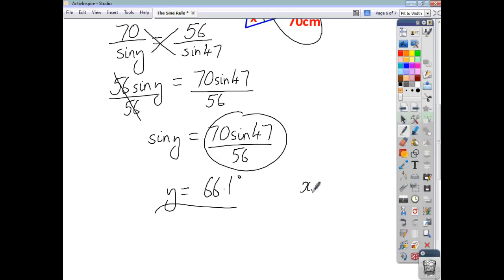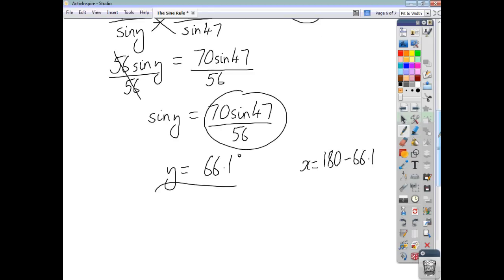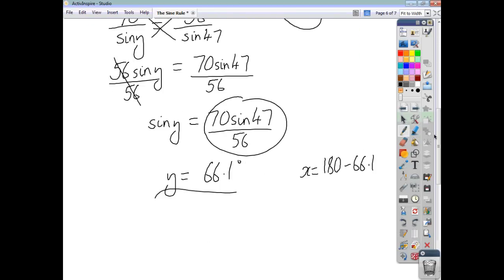And if you make use of the fact that all three angles in the triangle add up to 180, and you take away the two angles you've got from 180, you end up with x being 66.9 degrees. So that's how you use a sine rule to find a missing angle. Remember, the question will always involve two pairs of opposites, and take care when you're working your way through each solution. So I hope that was helpful. Thank you.